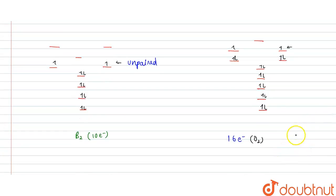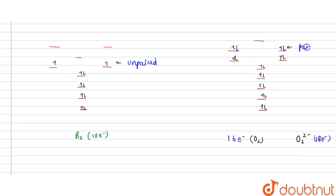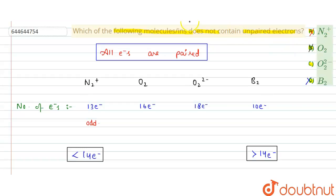Now we check O₂²⁻, which has 18 electrons. It has the same 16-electron configuration as O₂, but we add 2 more electrons. These two additional electrons fill the remaining π* orbitals, pairing all electrons. Therefore all electrons in O₂²⁻ are paired, making it the correct answer — option C.